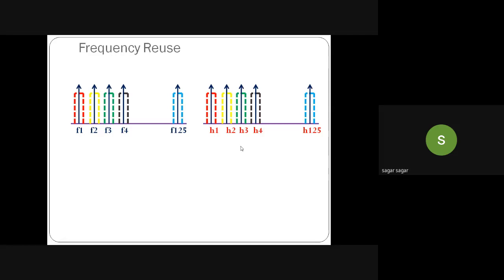We will take a particular example: out of these 125 channels, let us assume a particular service provider — say Airtel — is assigned 42 channels. Remaining channels can be allocated to other service providers. Different service providers must be allocated different frequencies; otherwise there will be interference.